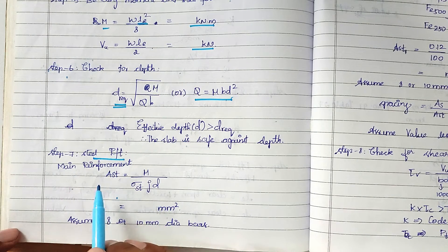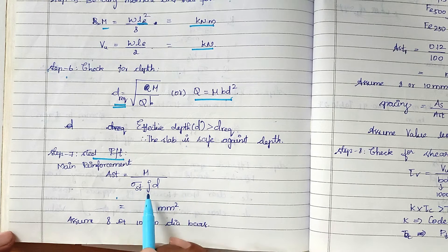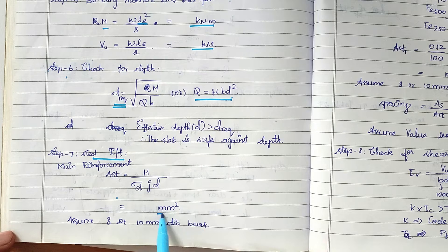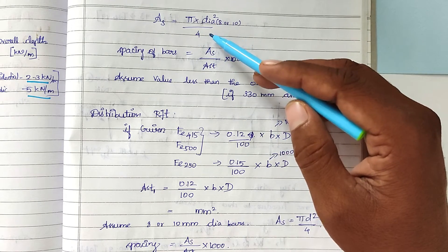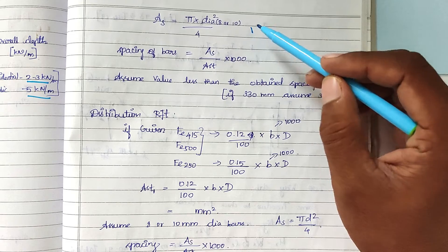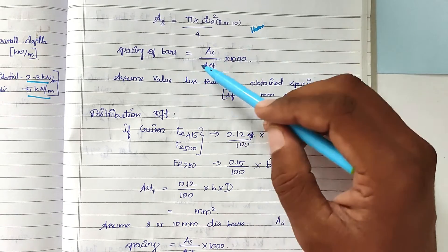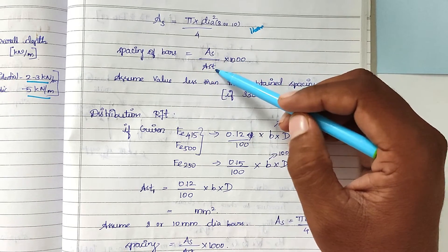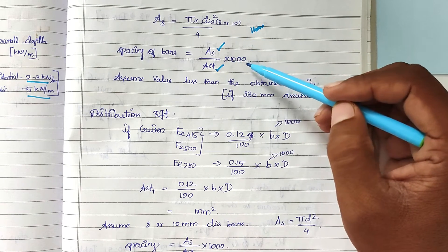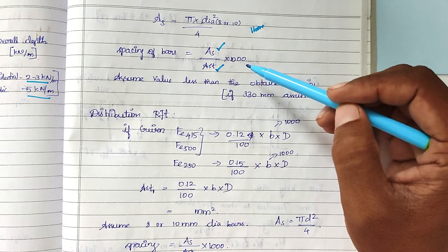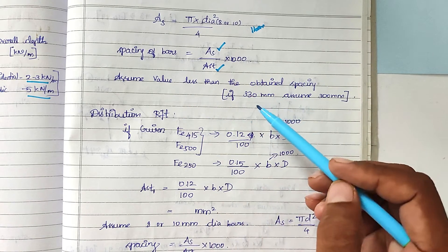For main steel reinforcement, we use the formula: Ast = M / (Sigma ST × j × d). Substituting all values gives the required area in mm². We then assume 8 mm or 10 mm diameter bars, calculate the area of one bar as π × d² / 4, and find the spacing of bars as: spacing = (one bar area / Ast) × 1000. We assume a spacing value slightly less than the calculated spacing.